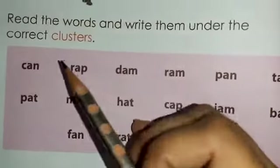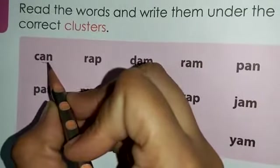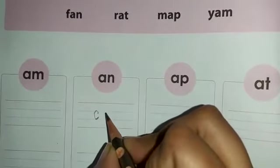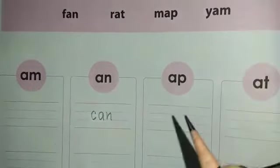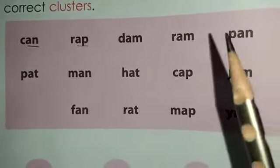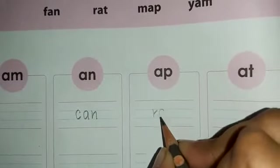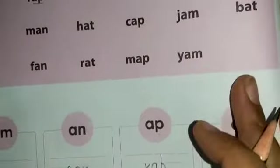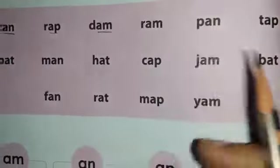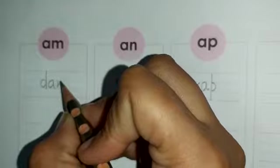Let's do it together so you will understand. The first word is C-A-N, can. This is an AN cluster word, so we are going to write this under AN cluster. C-A-N, can. Now the next one: wrap. This is an AP cluster word, so we will write it down here. W-R-A-P, wrap. Now the next one: D-A-M, dam. This is an AM cluster word, so we will write this down under AM. D-A-M, dam.